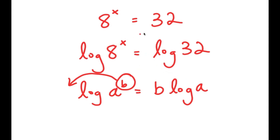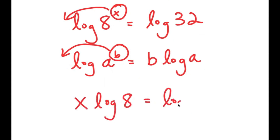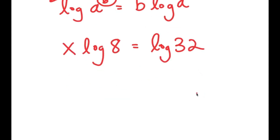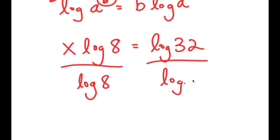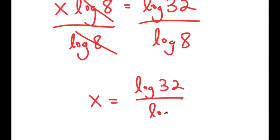So now, in the case of log 8 to the power of x, we can think of x as b, so we can move x to the front of the logarithm. So I get x times log of 8 is equal to log of 32. From here, I'm going to divide both sides by log 8 to isolate x. These two cancel out, and I get x is equal to log of 32 over log of 8.